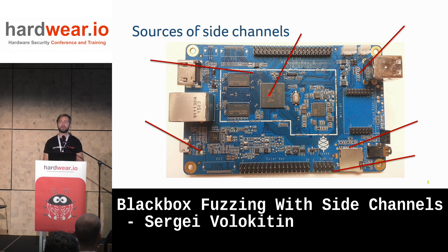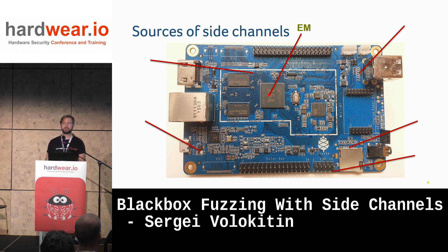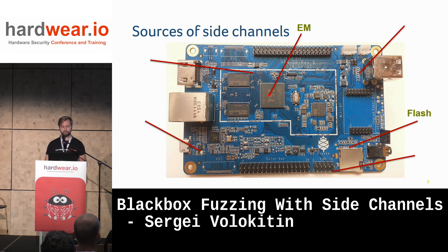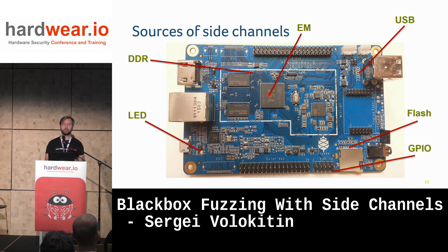What kind of side channels can we talk about? The classic ones are power traces or EM traces, used a lot for attacking cryptographic secrets. But here we can try to use the same traces to understand what kind of code is executing. Maybe there is flash memory, and we can see if specific code tries to access flash. We can see USB activity, DDR memory, GPIOs, even LEDs. If we can collect and process this information properly, we can understand what the target actually does.